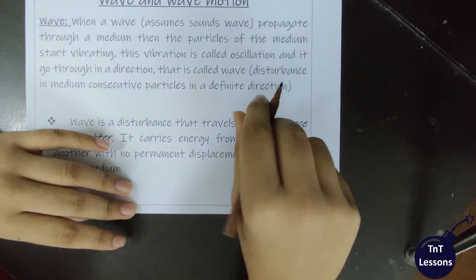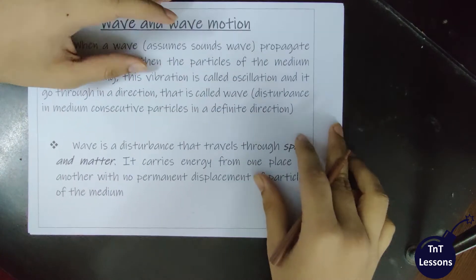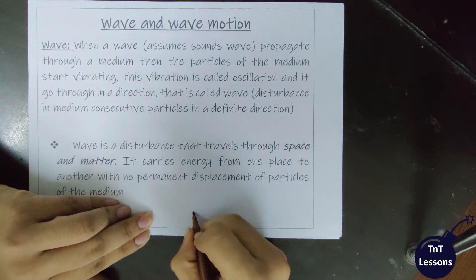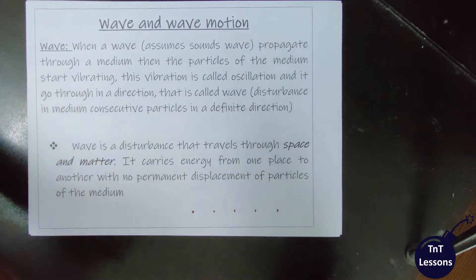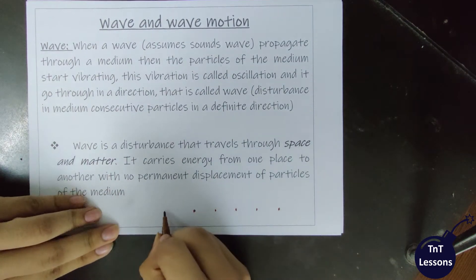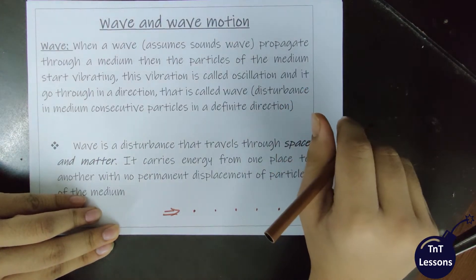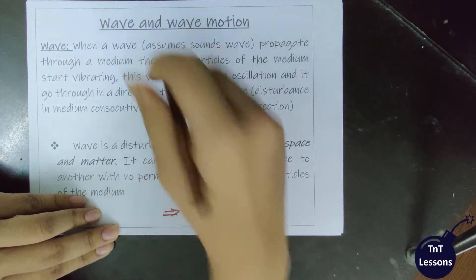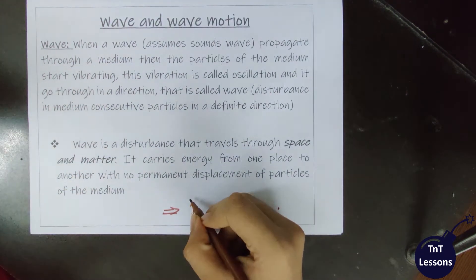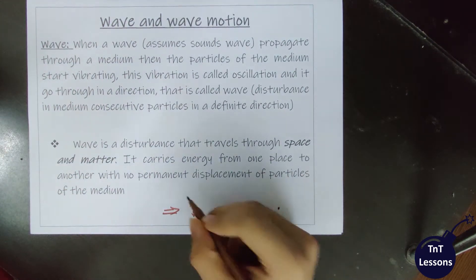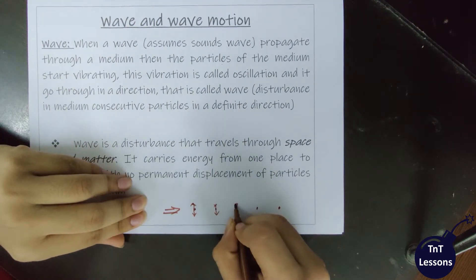We are going to talk about particles. We are going to talk about how sound waves travel. Every particle has a to-and-fro motion. Particle motion means being displaced from the mid position and so on. Every particle undergoes this to-and-fro oscillation motion.